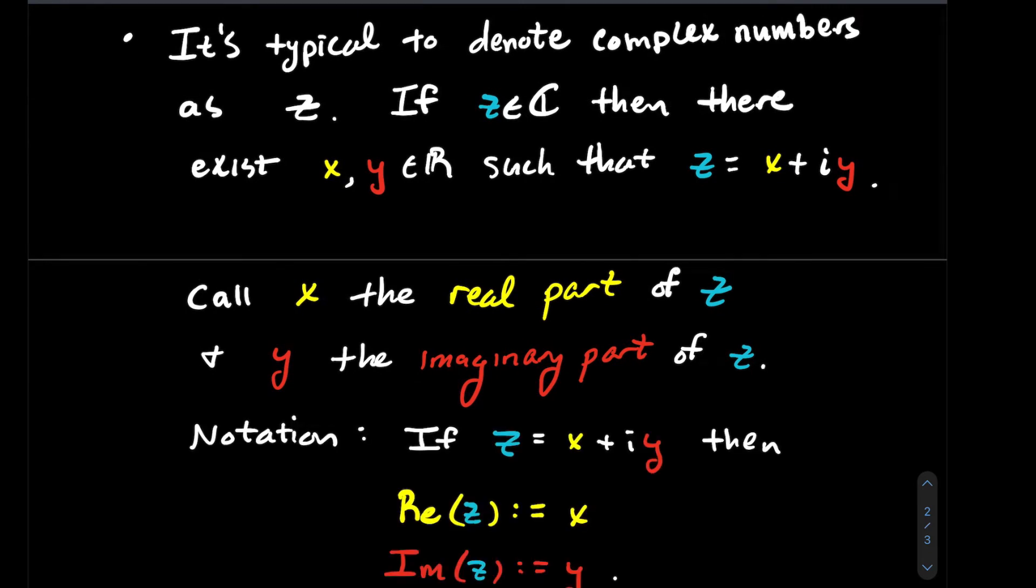If z is x plus iy, then to quickly talk about the real part and imaginary part, we're going to use this function notation: RE of z is x and IM of z is y.